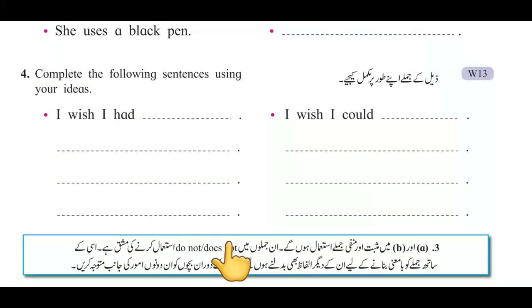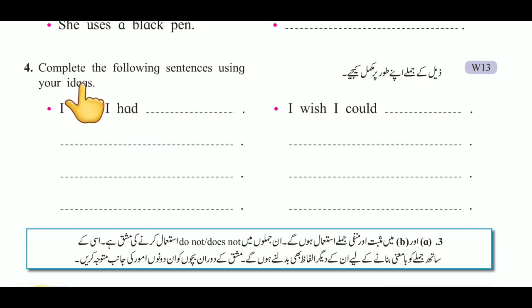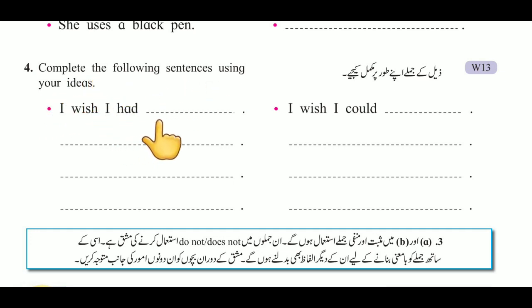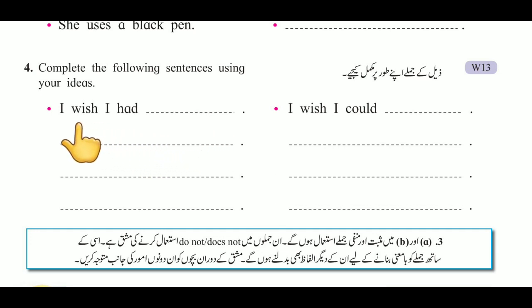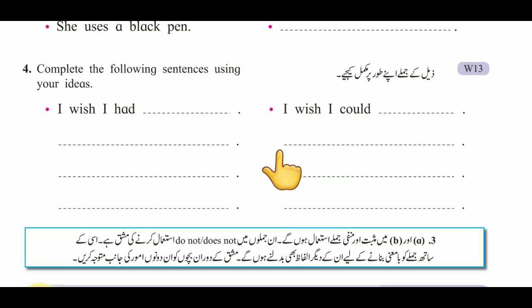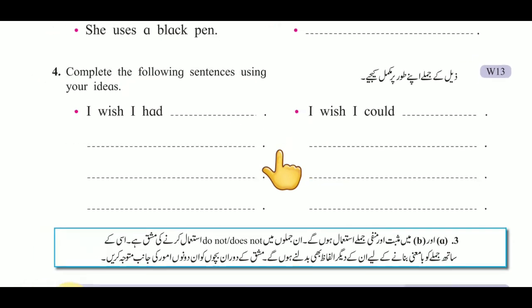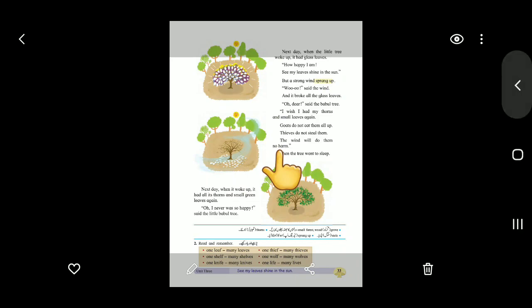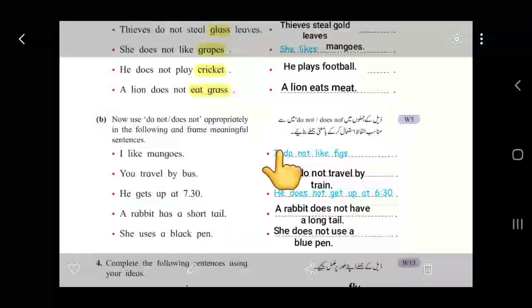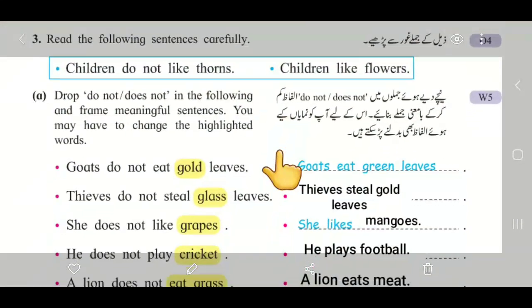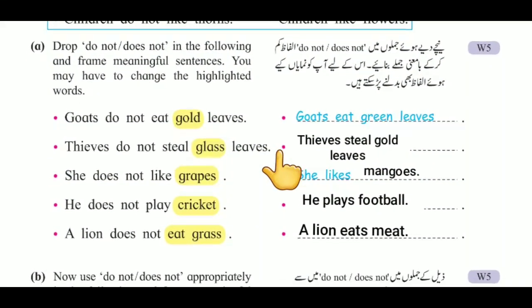Then question number 4: complete the following sentences using your own ideas. ذیل کے جملے اپنے طور پر مکمل کیجیے۔ For example: 'I wish I had a magic carpet,' 'I wish I could fly.' You need to fill these up in your notebook and complete questions A, B, and question number 4.